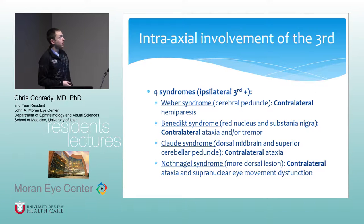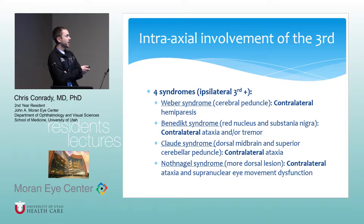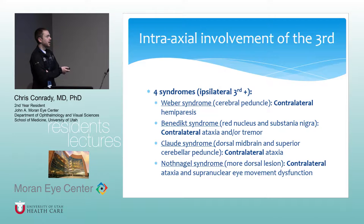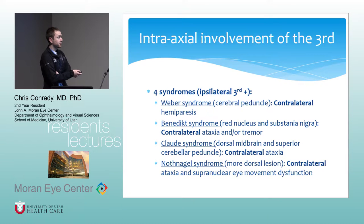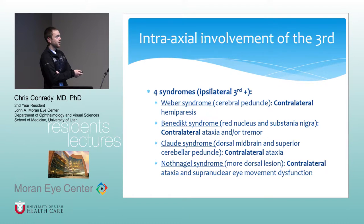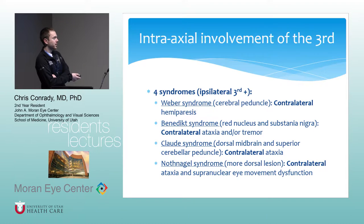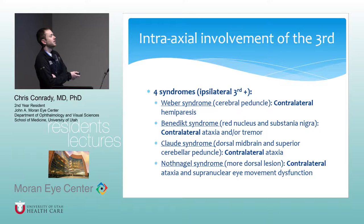When we look at intra-axial involvement of the third nerve, there are basically four syndromes tested on OCAPs and the boards. They all cause an ipsilateral third plus something else. Weber syndrome causes a contralateral hemiparesis — that's the only one to cause hemiparesis. The other three cause some sort of contralateral ataxia with or without an additional finding. Benedict syndrome can cause contralateral ataxia with or without tremor, Claude syndrome causes just a contralateral ataxia, and the last one can cause a supranuclear eye movement dysfunction.